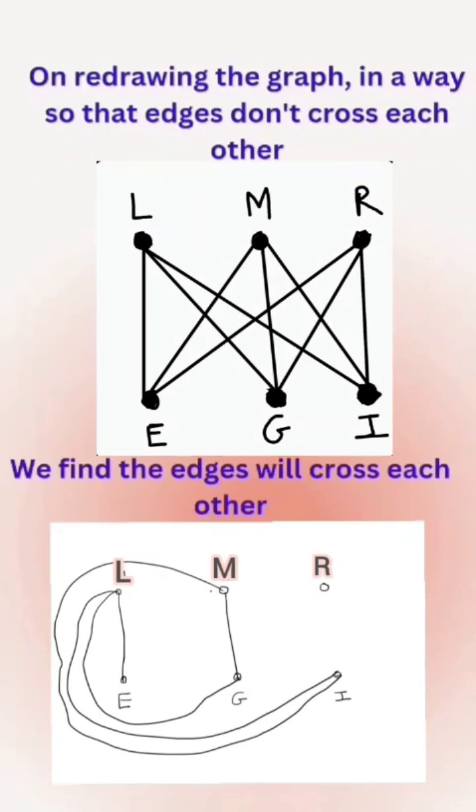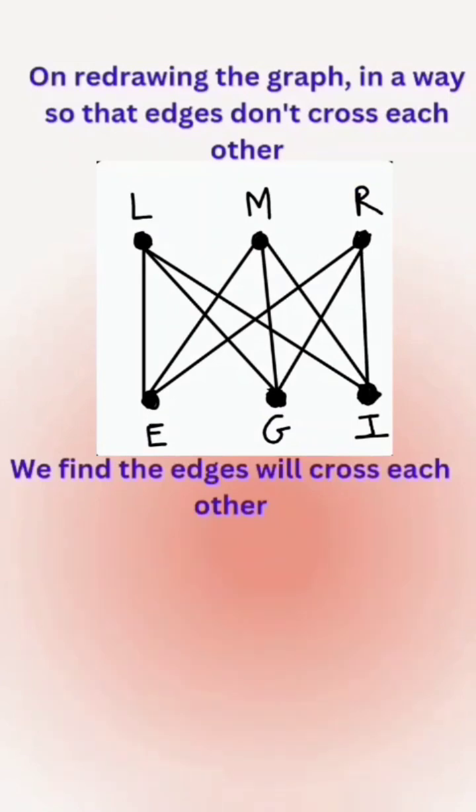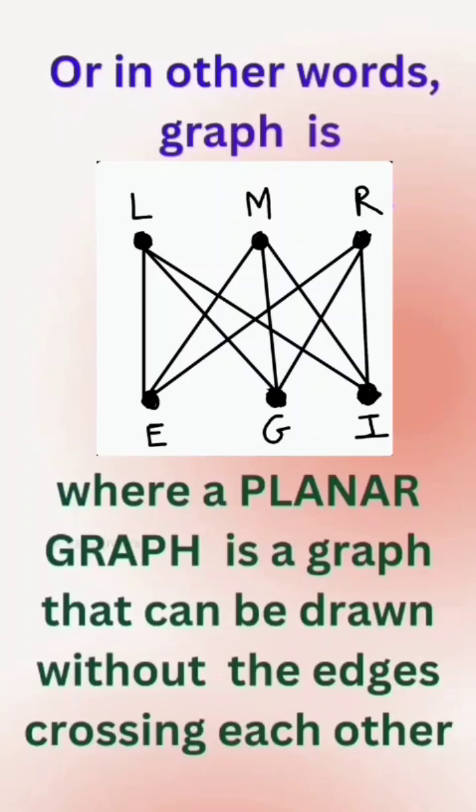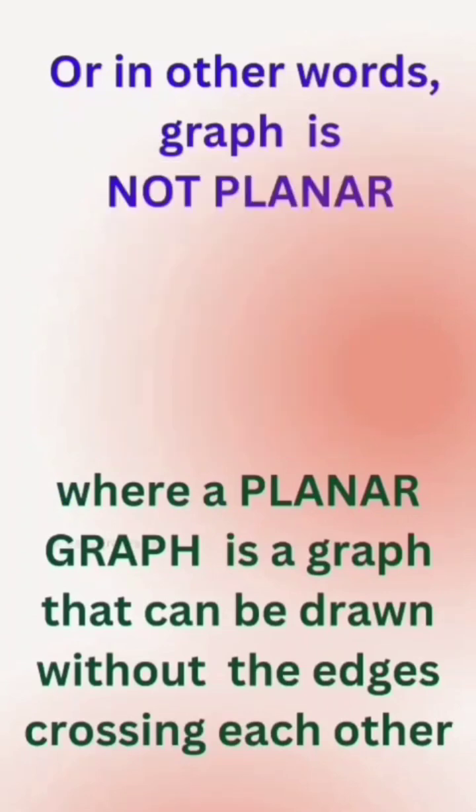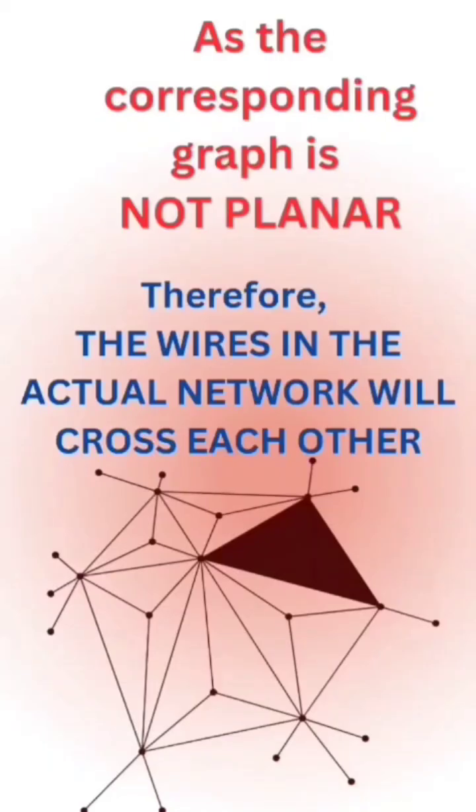I try to redraw the corresponding graph so that edges don't cross each other, but I find that the edges will always cross each other. This happens because the corresponding graph is non-planar, so the actual wires or connections will always cross each other in the network.